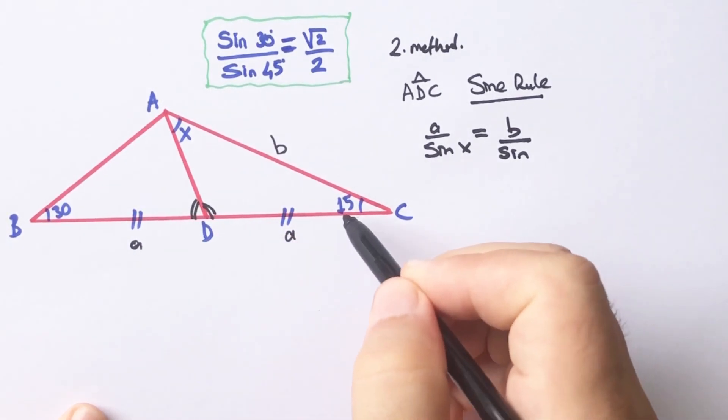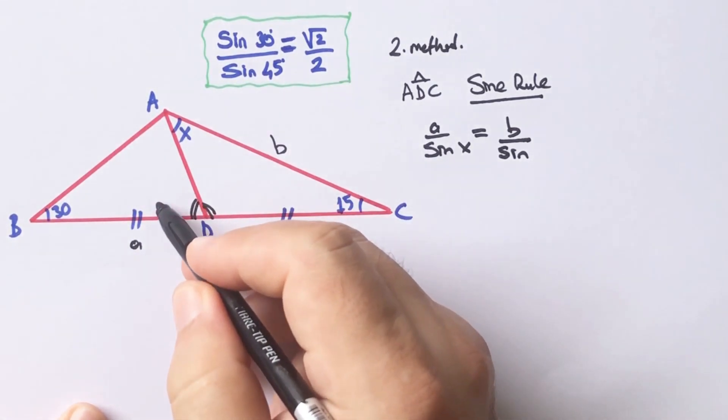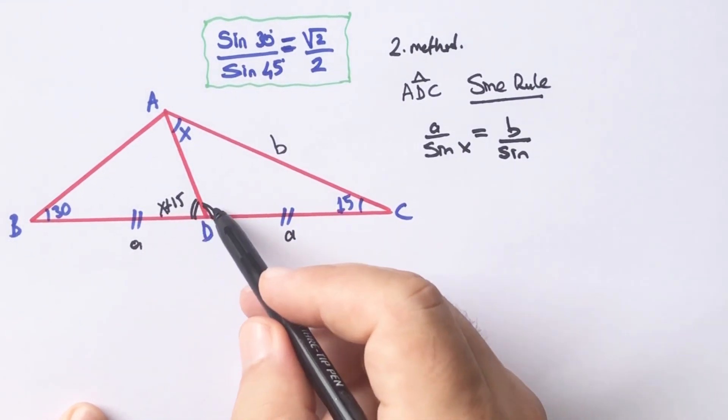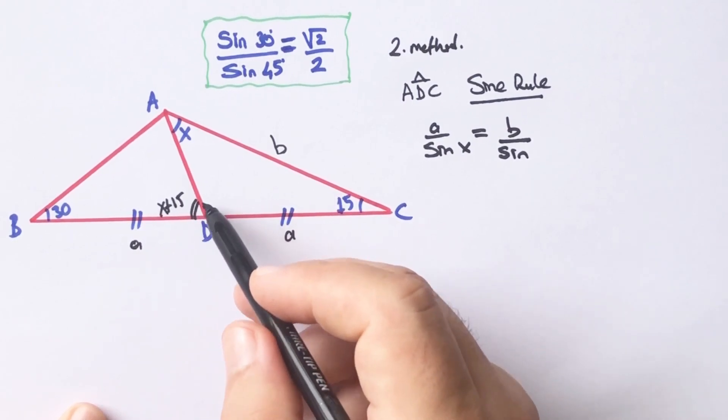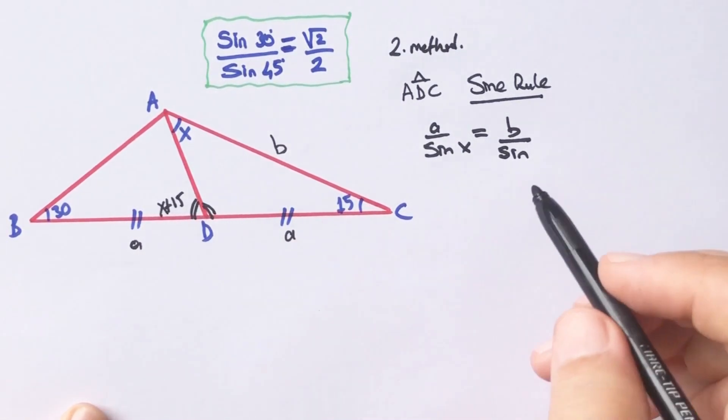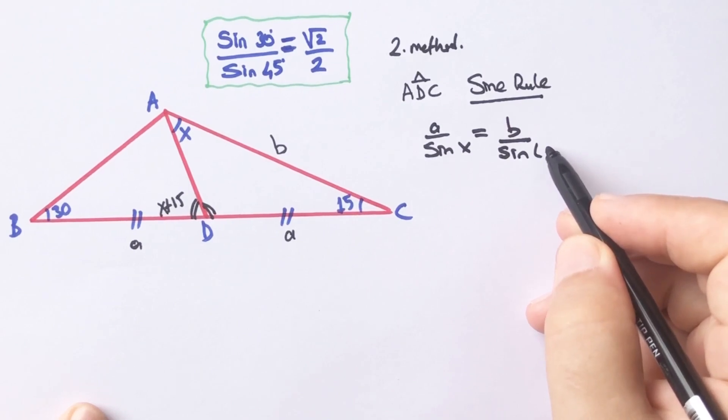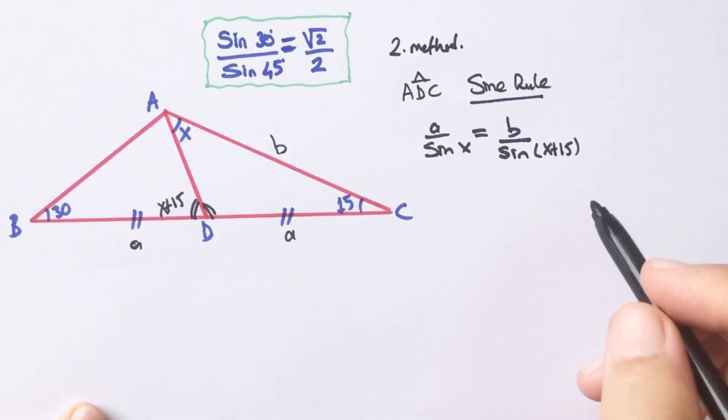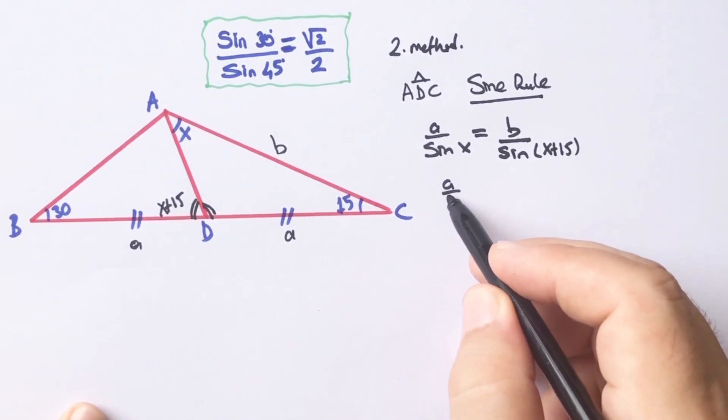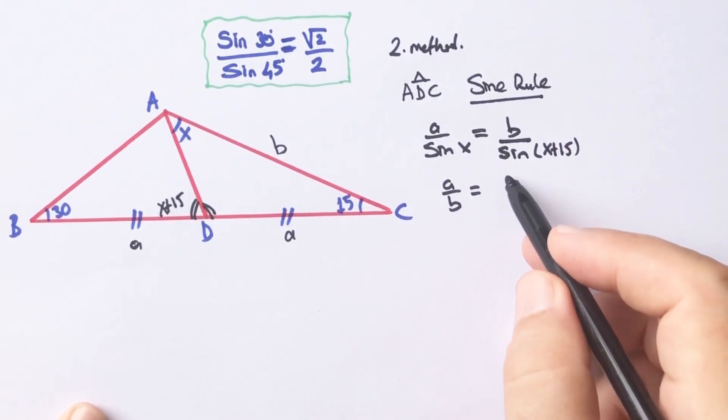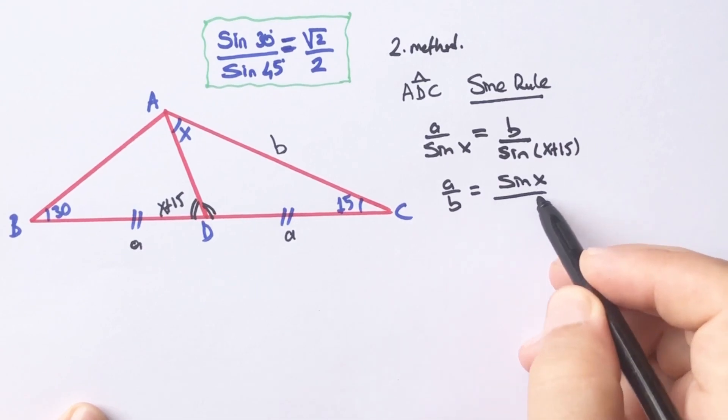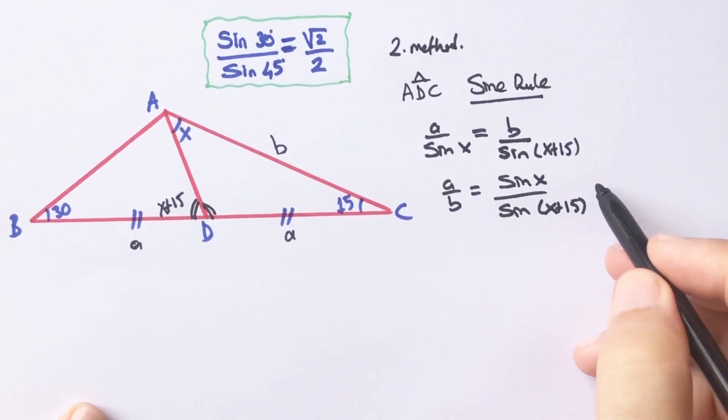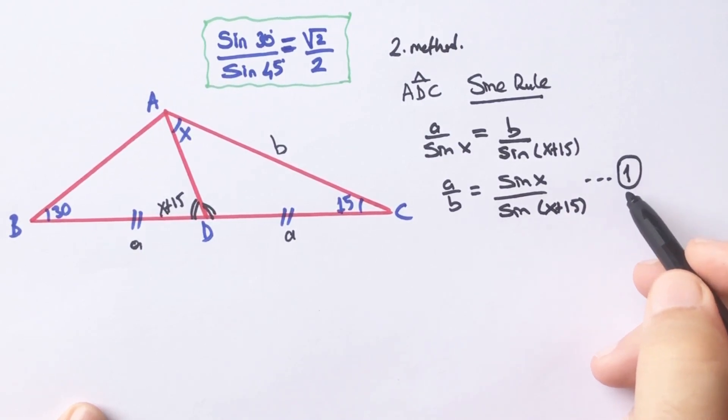We know that two interior angles equals one exterior angle and sines of the supplementary angles are equal. Therefore, we can calculate sine (x plus 15) instead of the angle sine adc. So a over b equals sine x over sine (x plus 15). This is the first equation.